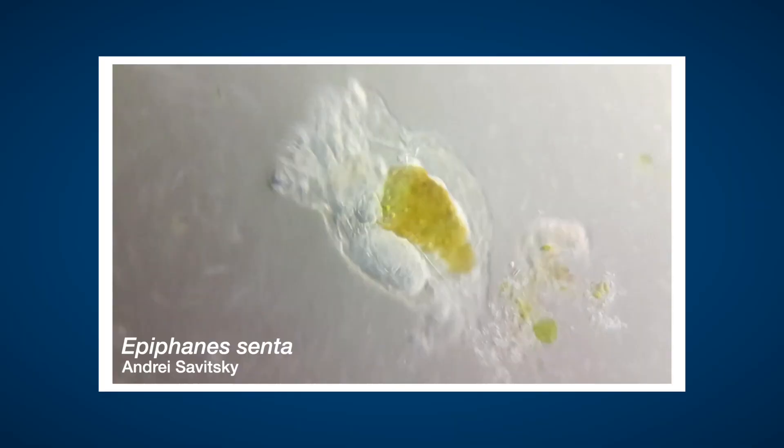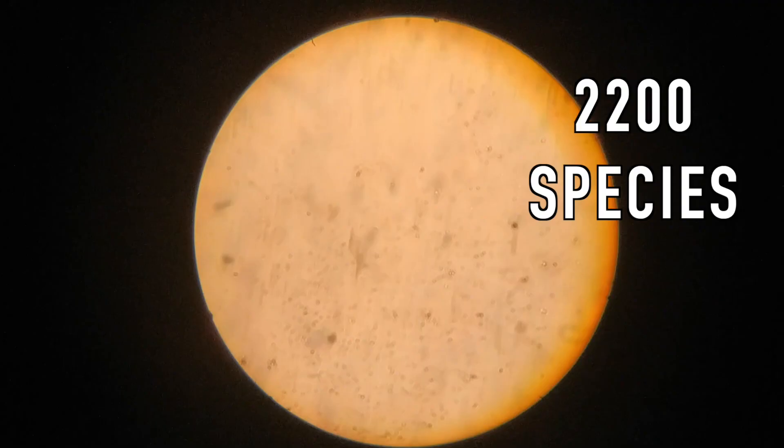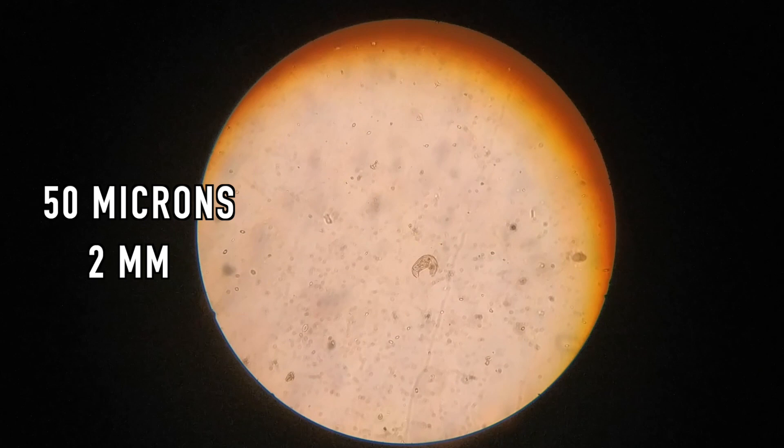The organisms we're gonna talk about today are the rotifers. They are animals, and they form their own phylum called Rotifera, which means wheel-bearer. They were first described by John Harris in 1696, and today we count around 2,200 species. Their size varies between 50 microns and 2 millimeters. They are divided in three subgroups: Bdelloidea, Monogononta, and Seisonidea.